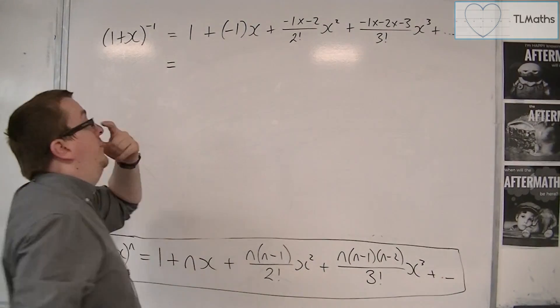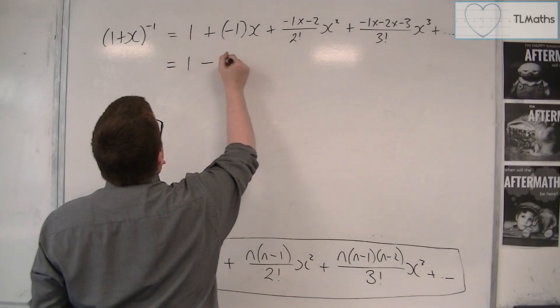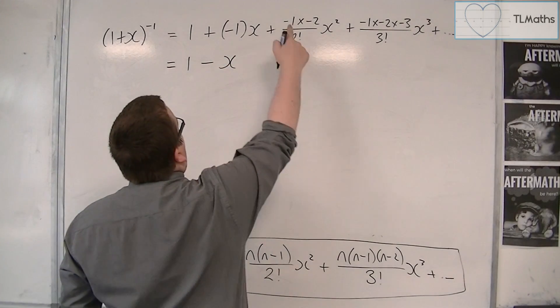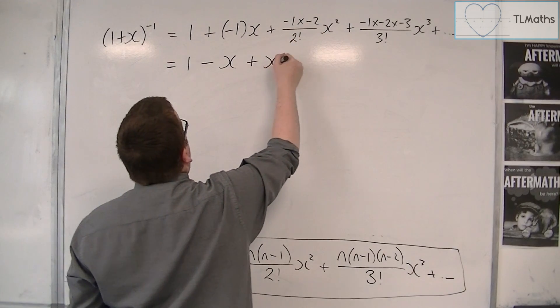So if we simplify this, we have 1 take away x. We've got minus 1 times minus 2, which is 2. 2 over 2 is just 1, so it's plus x squared.